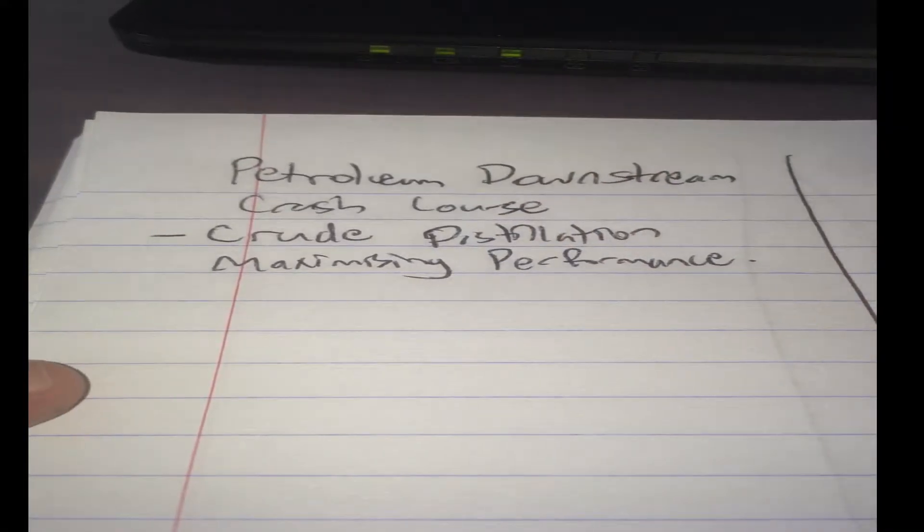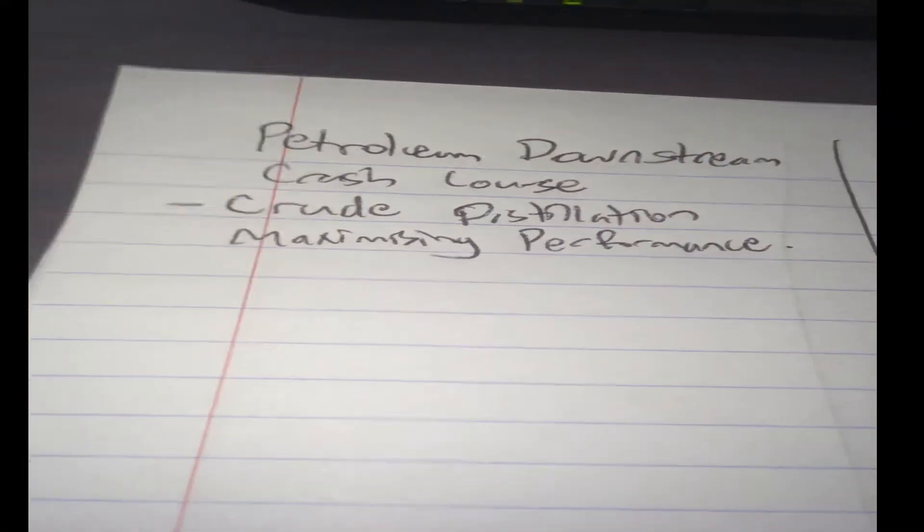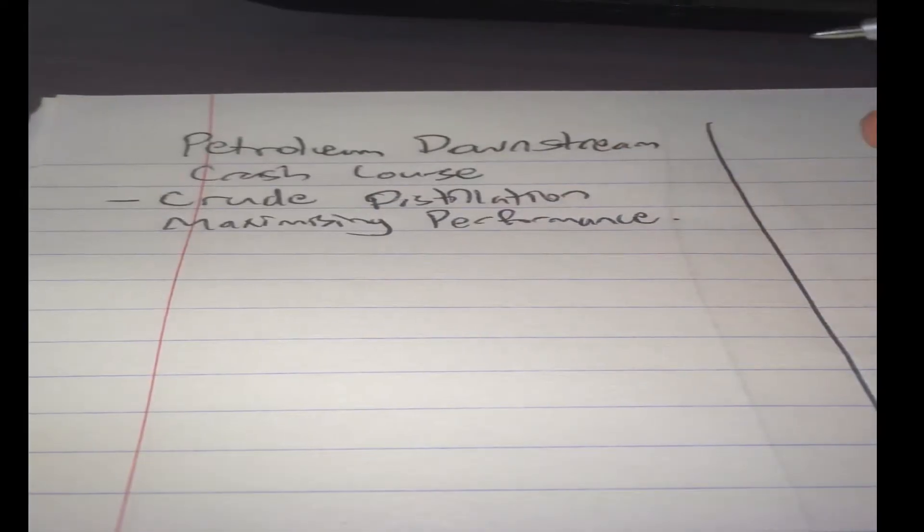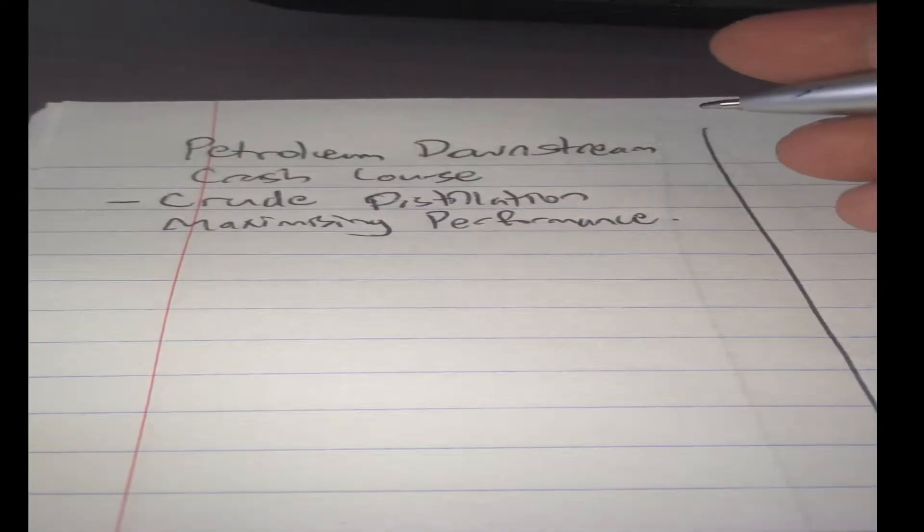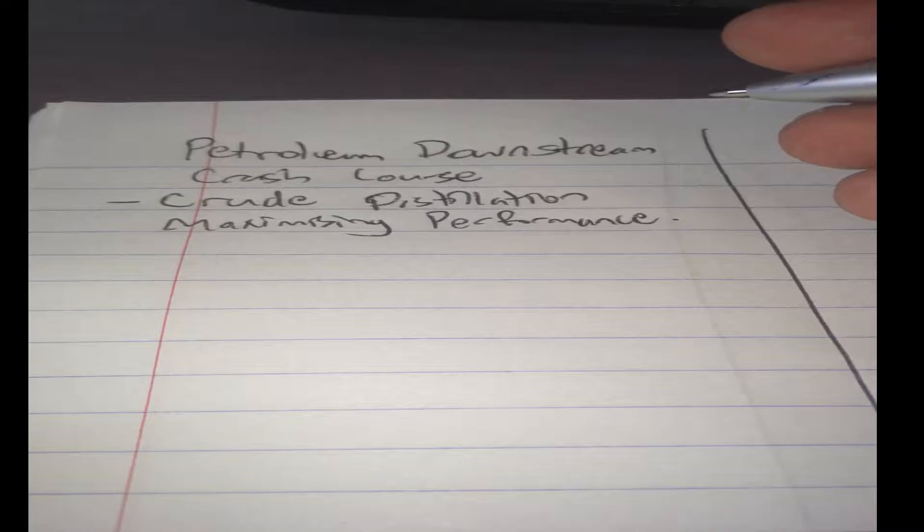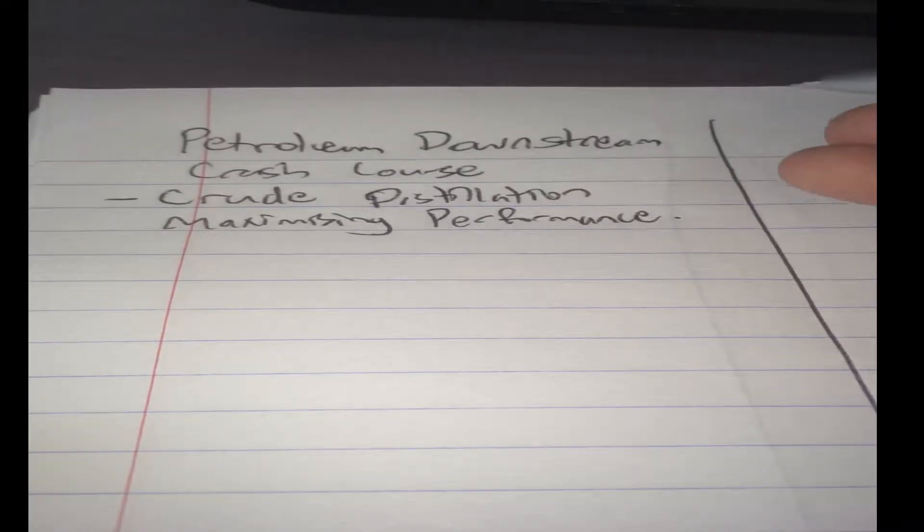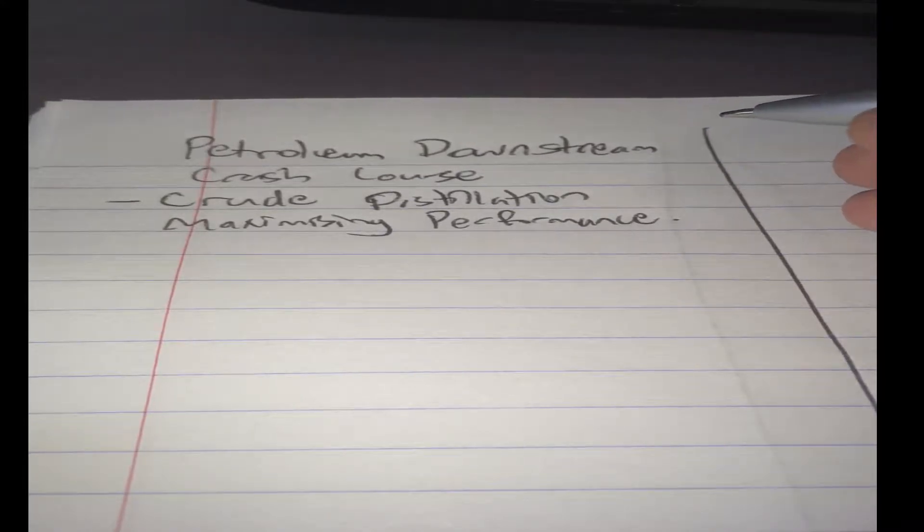Hello, good day to you, my name's Theo, and we are back to doing Petroleum Downstream Crash Course. In our last video, we talked about a crude distillation unit, specifically the atmospheric tower and the vacuum tower.